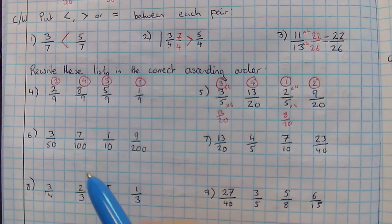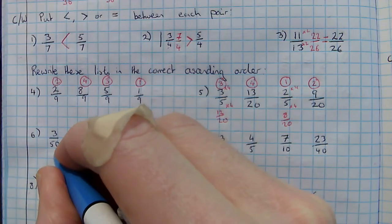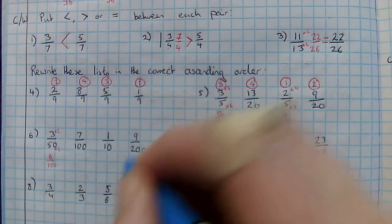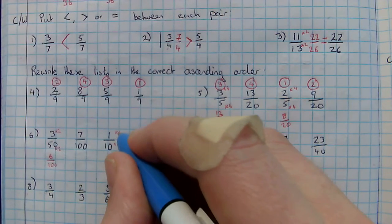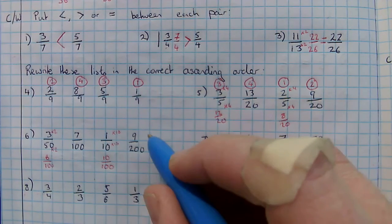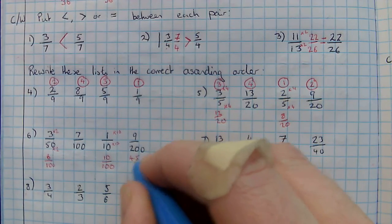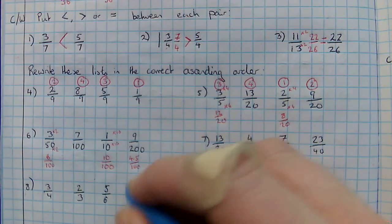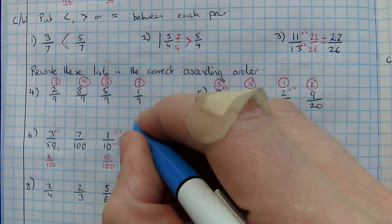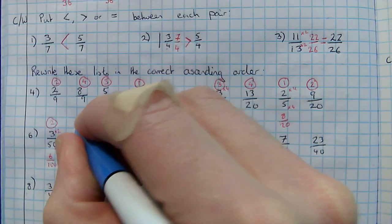Here, my lowest common denominator is going to be a hundred. Fifty goes into a hundred, ten goes into a hundred, so times that by two, which would give me six out of a hundred. Seven out of a hundred — times it by ten — to give me ten out of a hundred. What I could do is halve that, and that would give me four-point-five out of a hundred. Actually it's probably better in this case to put everything out of two hundred, but we should see that the smallest is nine out of two hundred, four-point-five, followed by six, followed by seven, followed by ten.